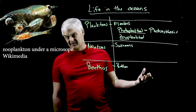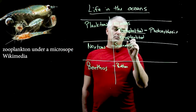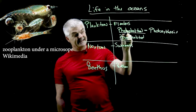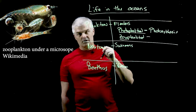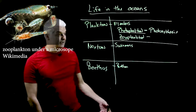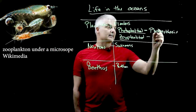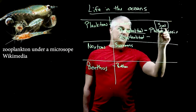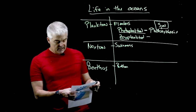'Zoo' comes from the word for animals, like 'the zoo.' Zooplankton are small animal creatures that eat the phytoplankton. They just float around, and when they run across a phytoplankton, they eat it — that's how they get their energy. But ultimately, everybody gets their energy from the sun.